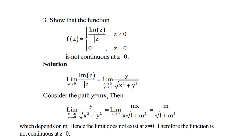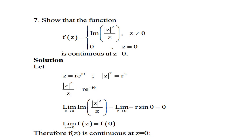We consider the path y = mx, a straight line. Then the limit as x → 0, y → 0 of y / √(x² + y²) becomes, substituting y = mx: mx / √(x² + m²x²) = mx / (x√(1 + m²)) = m / √(1 + m²), which depends on m. So if m = 1 (path y = x) we get one limit, and if m = 2 (path y = 2x) we get another. The limit is not unique — it depends on the value of m — hence the limit does not exist.